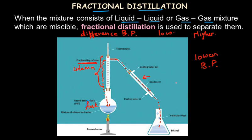Once the lower-boiling liquid has fully distilled over and been collected, the temperature rises until the boiling point of the second liquid is reached — monitored by the thermometer. The second liquid then evaporates, passes through the condenser, and is collected separately in a different flask. The apparatus requires a fractionating column, condenser, Bunsen burner, flask, and collection vessels.